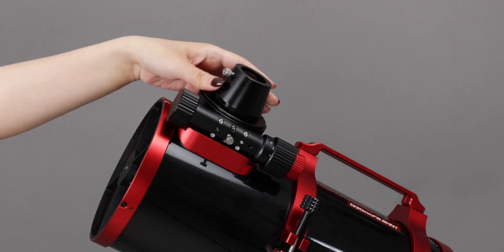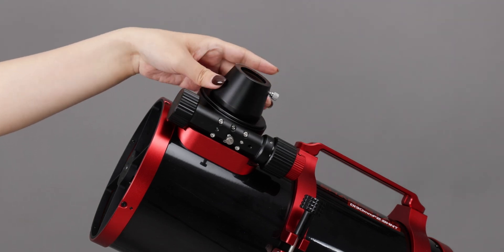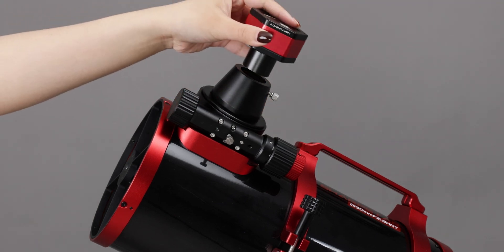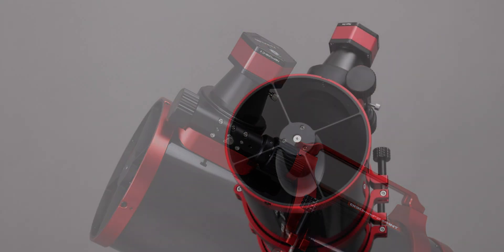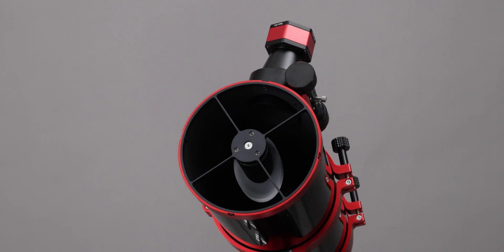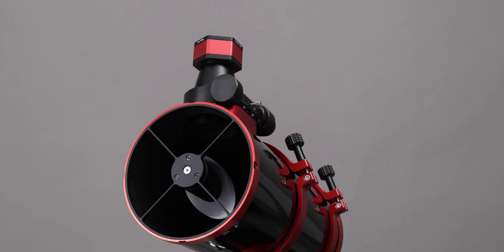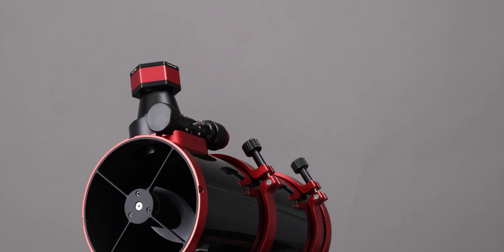Connect an eyepiece or a camera and make the 130280HNTL in focus. Mount the 130280HNTL to an equatorial mount or a base, aimed at an artificial star point or a bright star point to observe.